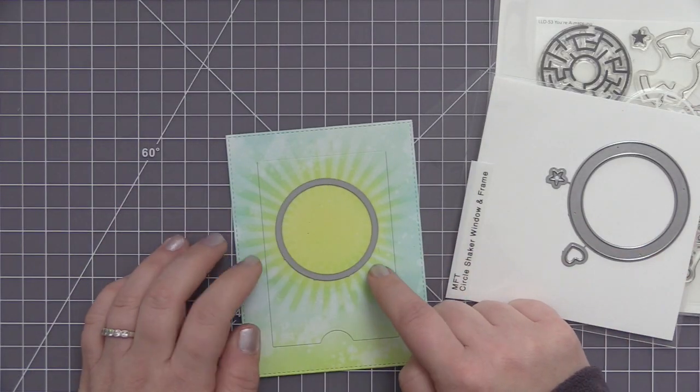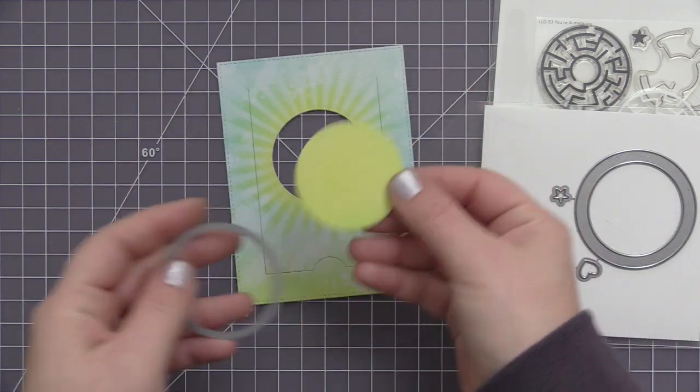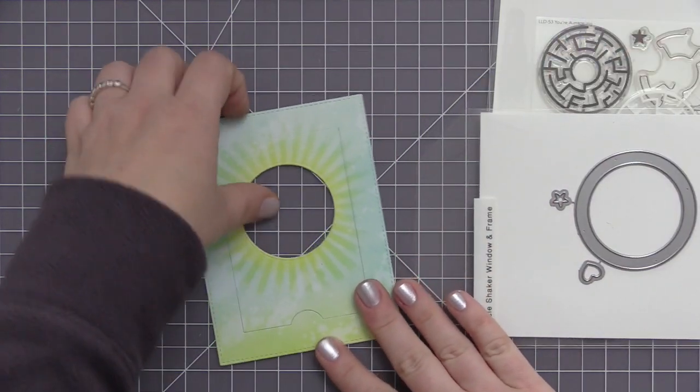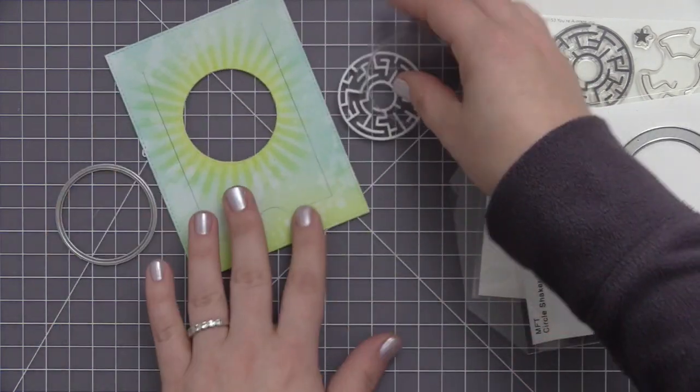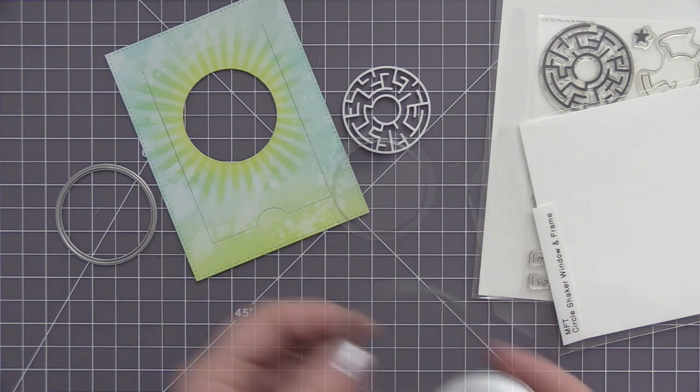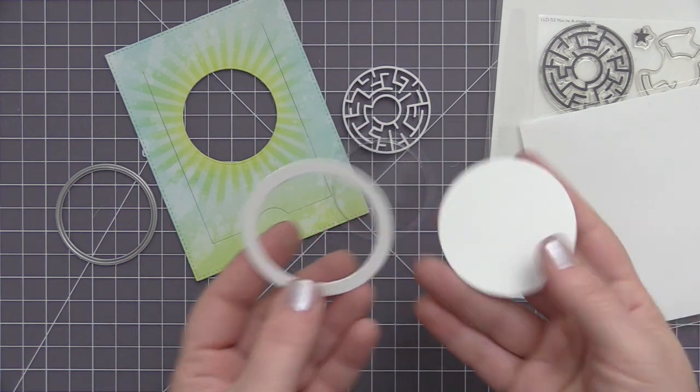So I pulled out all the pieces that I need to assemble the maze. What I'm going to do first is cut out a circle window area in the front of the panel and for that I'm using the circle shaker window and frame dies and you can see there that the circle shaker pouch and that frame piece or that maze piece is going to fit perfectly in that opening.